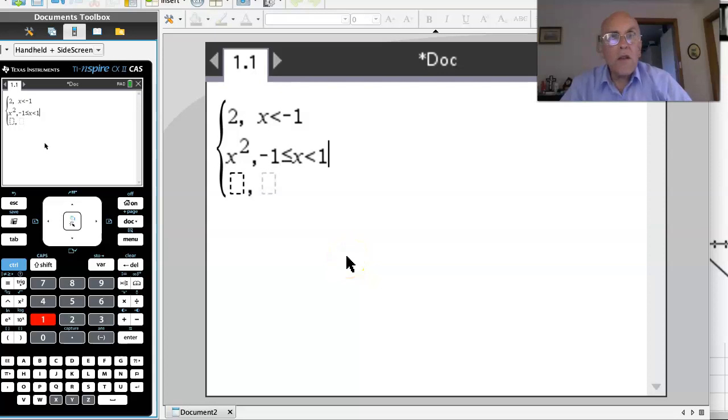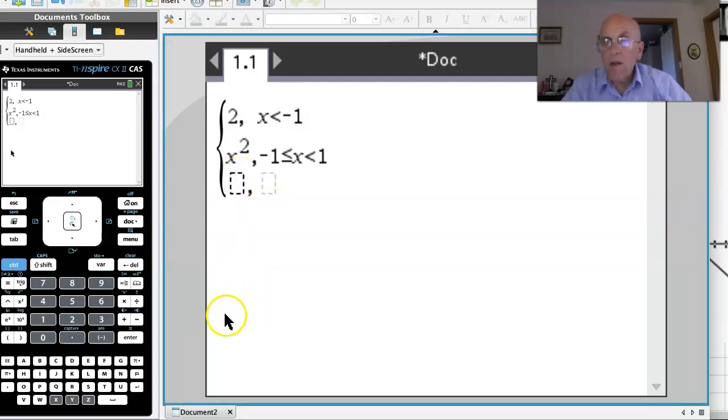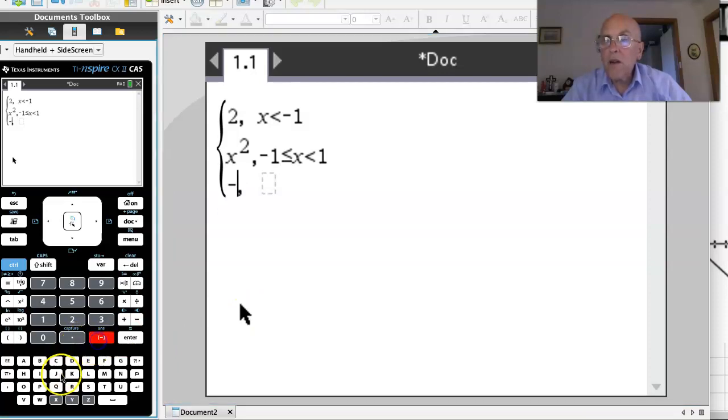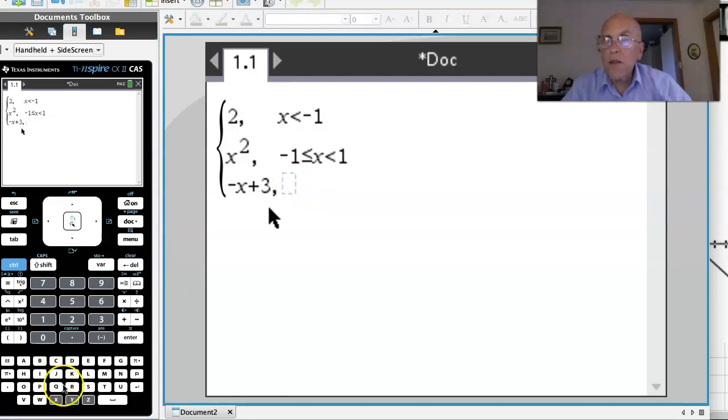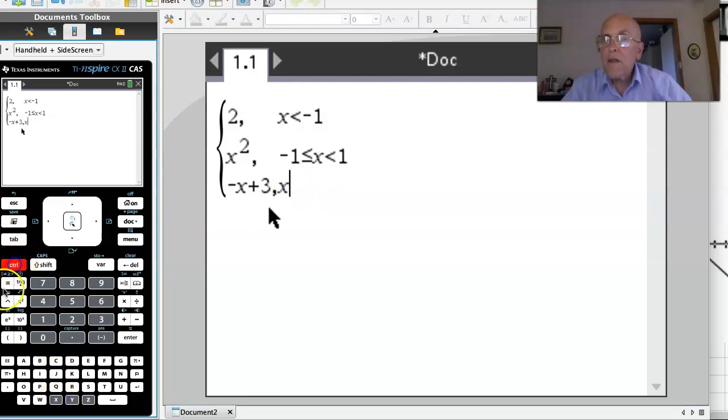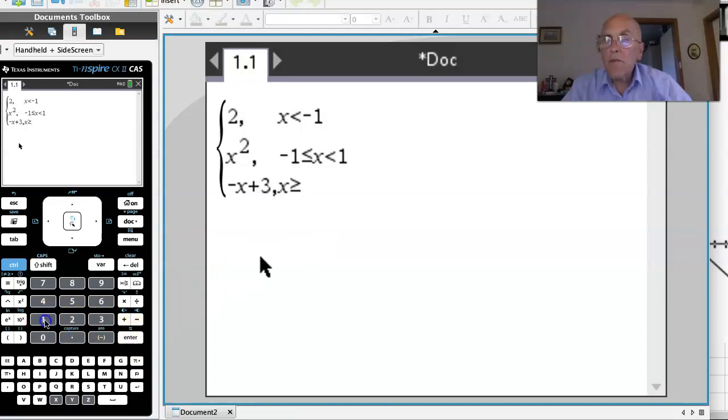You want to do this with me perhaps, or pause me and catch up and then keep going with me, because you need to know how to do this CAS stuff. You absolutely do. Okay, minus x plus 3 for the next bit. So it's minus x plus 3. And that was for x is greater than or equal to 1. So I'll put in there, so I've got x is greater than or equal to 1.